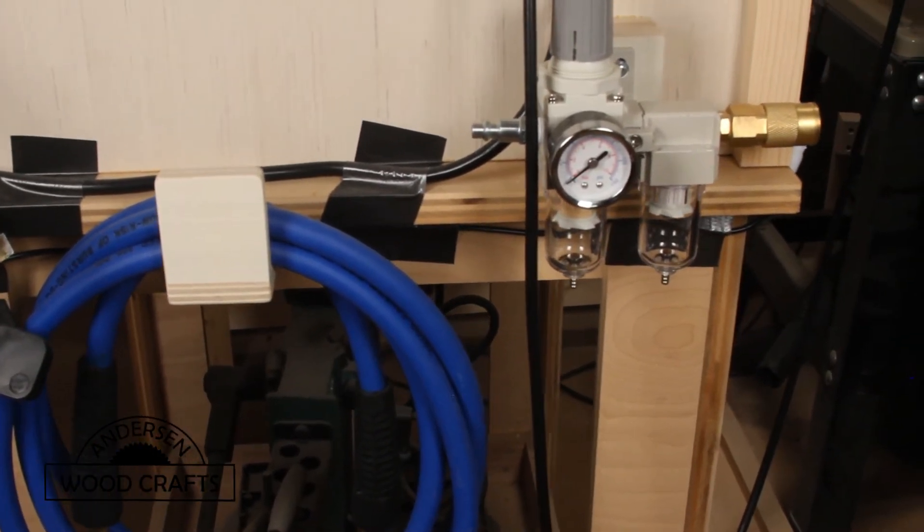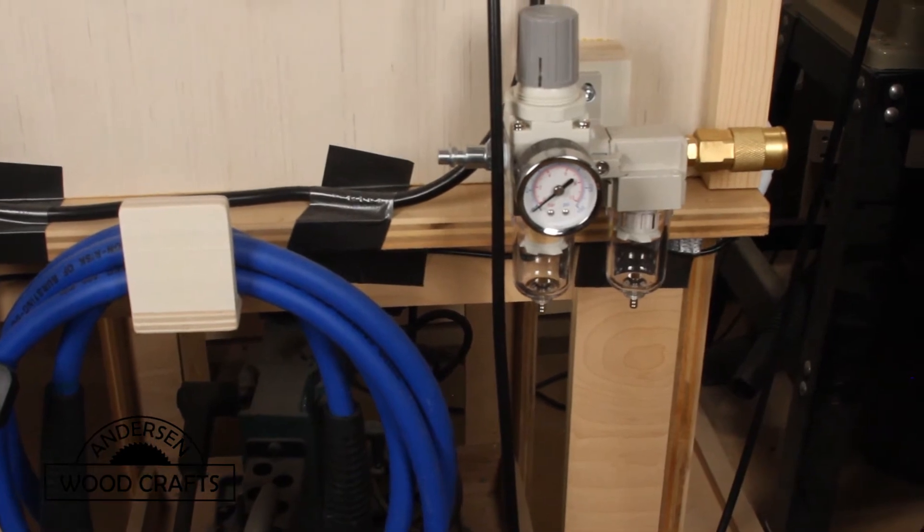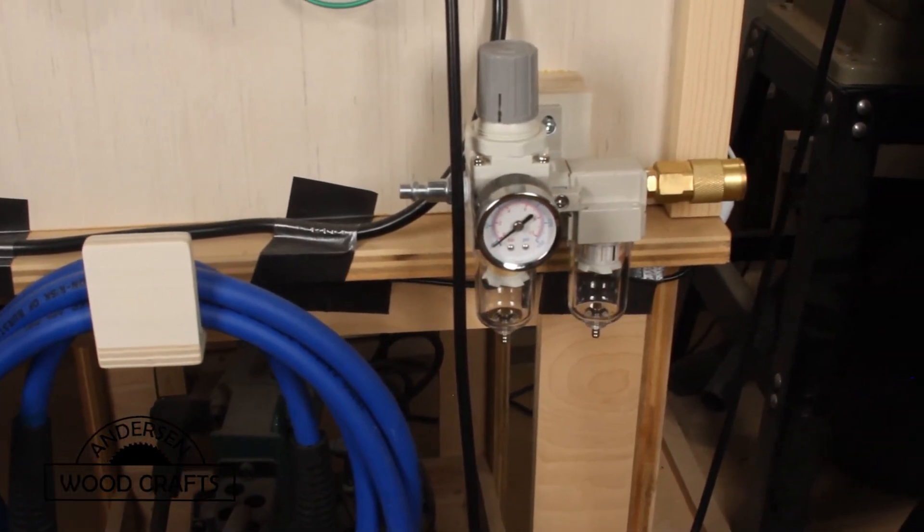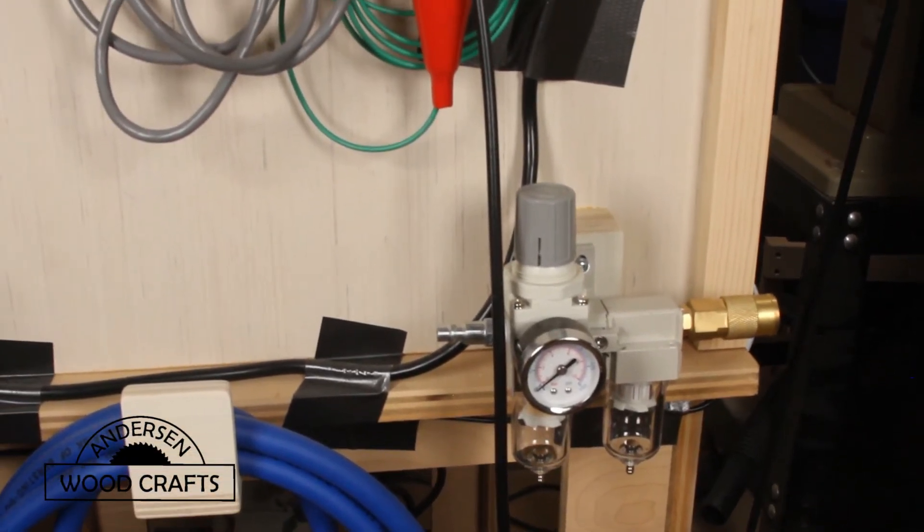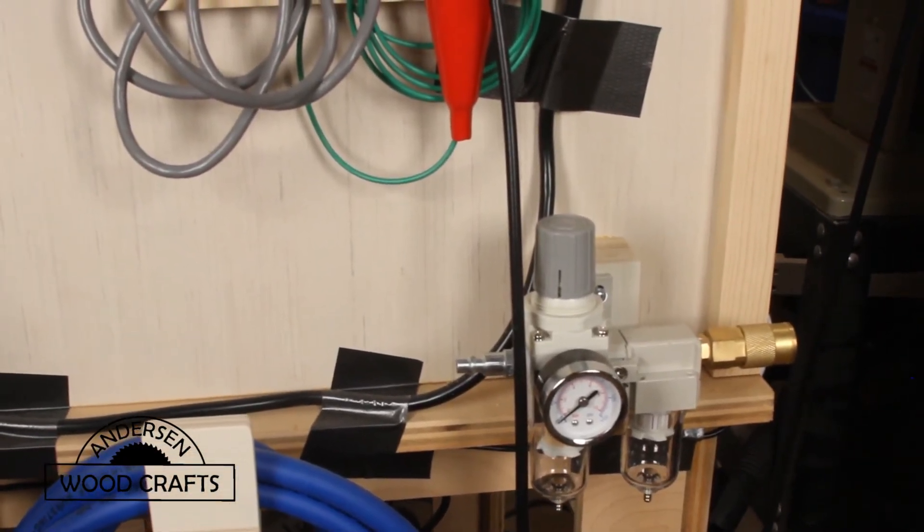Now when you're powder coating, you want the air as dry as you can get it. And you also need to regulate the PSI of the air. So I just attached a dual regulator and dryer onto the side of the booth.